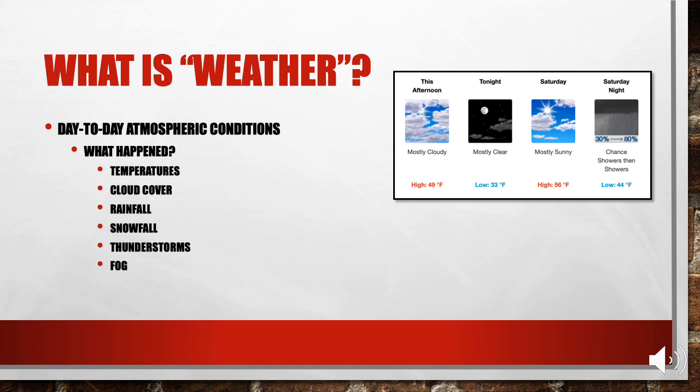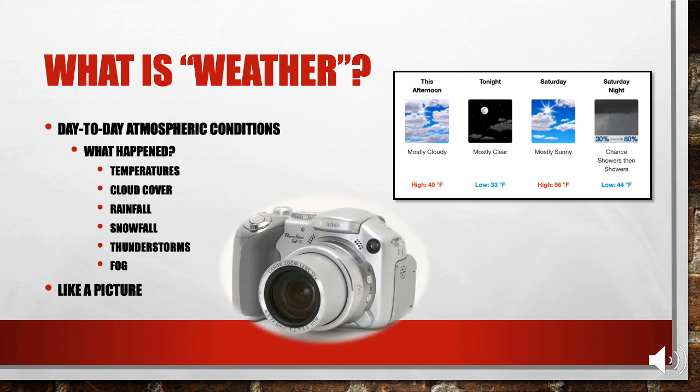Weather is simply the day-to-day atmospheric conditions, or in plainer language, what happened on a certain day. Weather is like a picture, a snapshot of what things are like in the atmosphere at a certain time. A weather forecast, like the example on your screen, contains a meteorologist's expectation of what the temperature will be at a specific time, whether or not it will rain, and how fast the wind speeds will be.